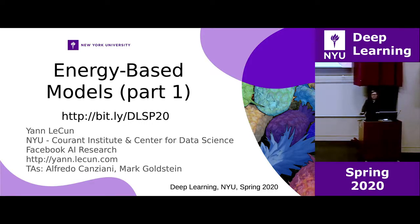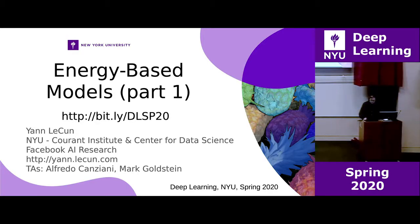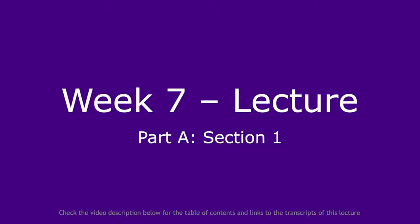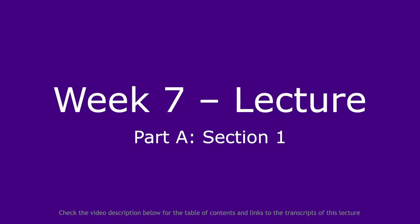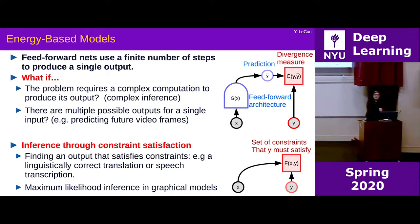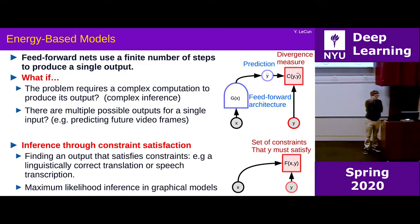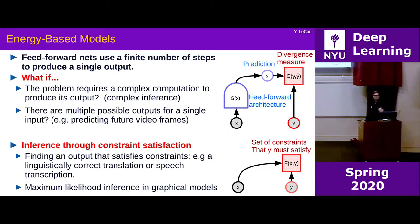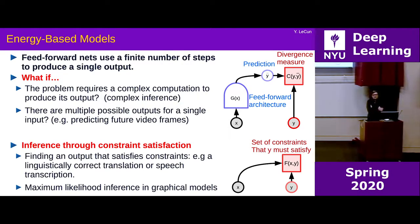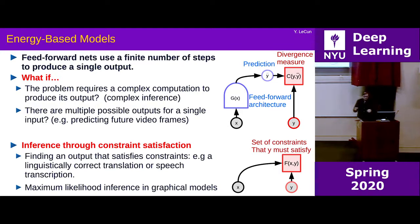What I'm going to talk about first applies equally well to supervised learning, what some people call unsupervised learning, or what I call self-supervised learning. Basically, we're talking about models that observe a set of variables X and predict a set of variables Y. X could be an image and Y a discrete variable for classification, or Y could be an entire view, a piece of text, a sentence in another language, a simplified version of a text, or an abstract. It could be anything.